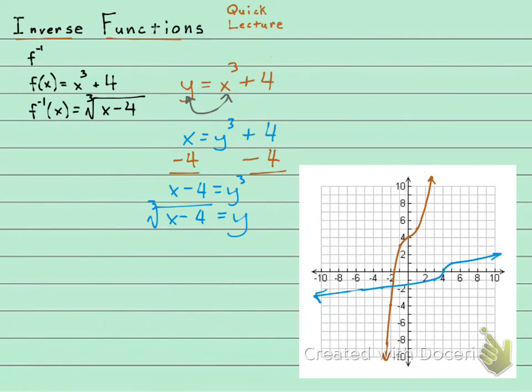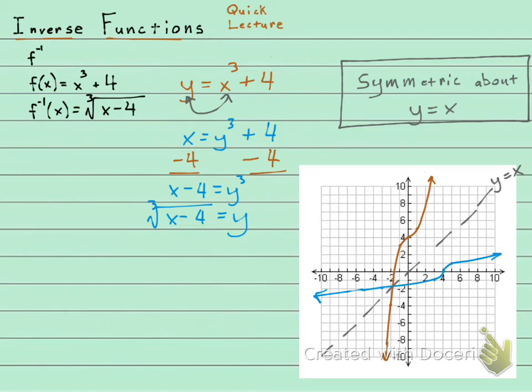When you graph them they are symmetrical, and they're symmetric about this line right here. It's a mirror image over this line, and this is the line y equals x. See how if you could fold it and take this and flip it up here that it would match. We've seen even functions that were symmetric about the y-axis, and we've seen odd functions that were symmetric about the origin. Inverse functions are symmetric about this line y equals x.